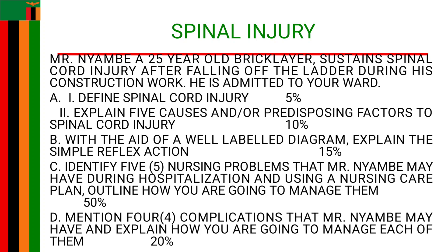We also have vascular disorders — conditions that affect blood flow to the spinal cord can cause injury. For example, spinal cord ischemia can cause injury to the spinal cord itself. So these are examples — vascular disorders, tumors, infections, degenerative diseases, and trauma — that can cause spinal cord injury.